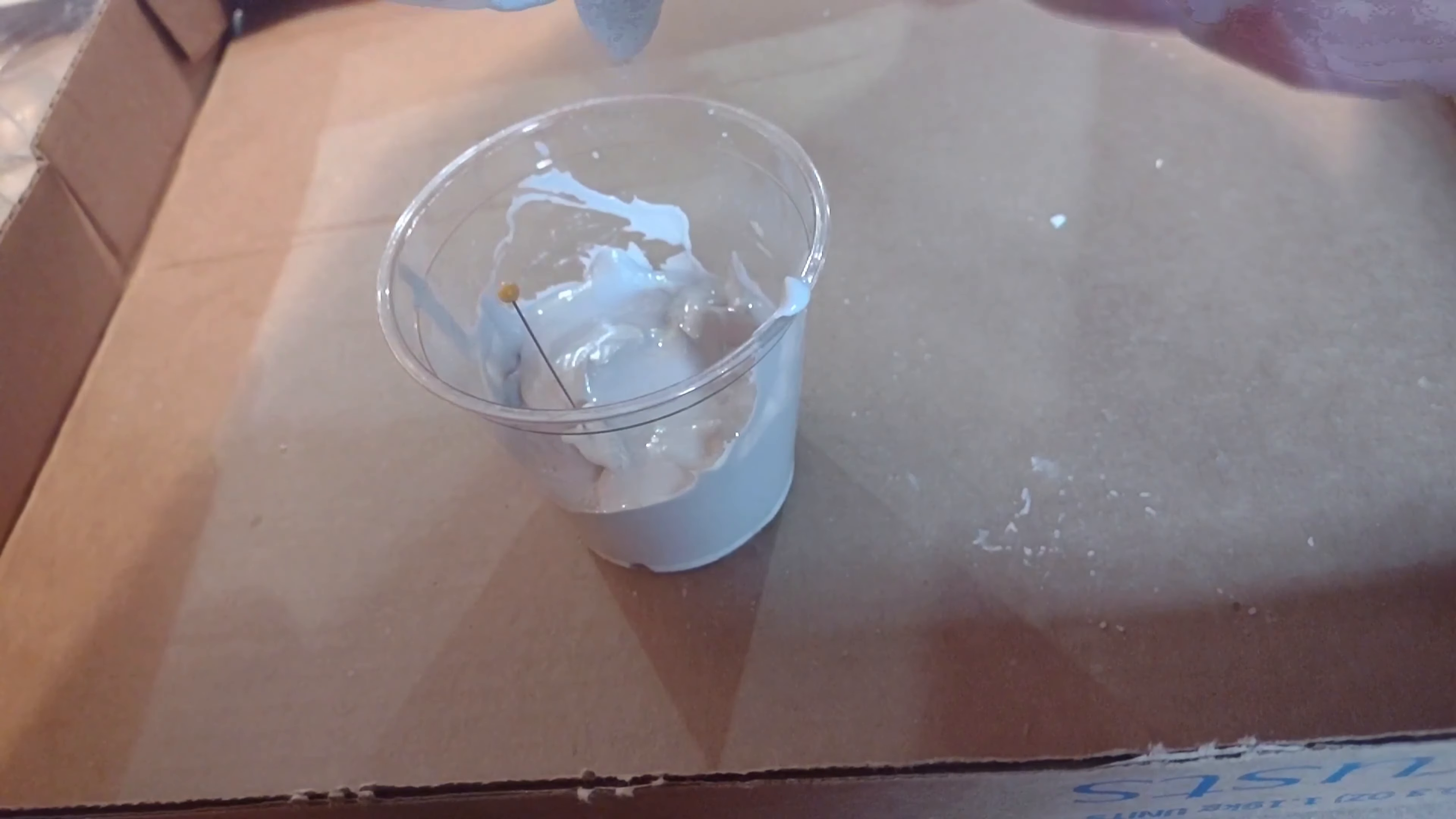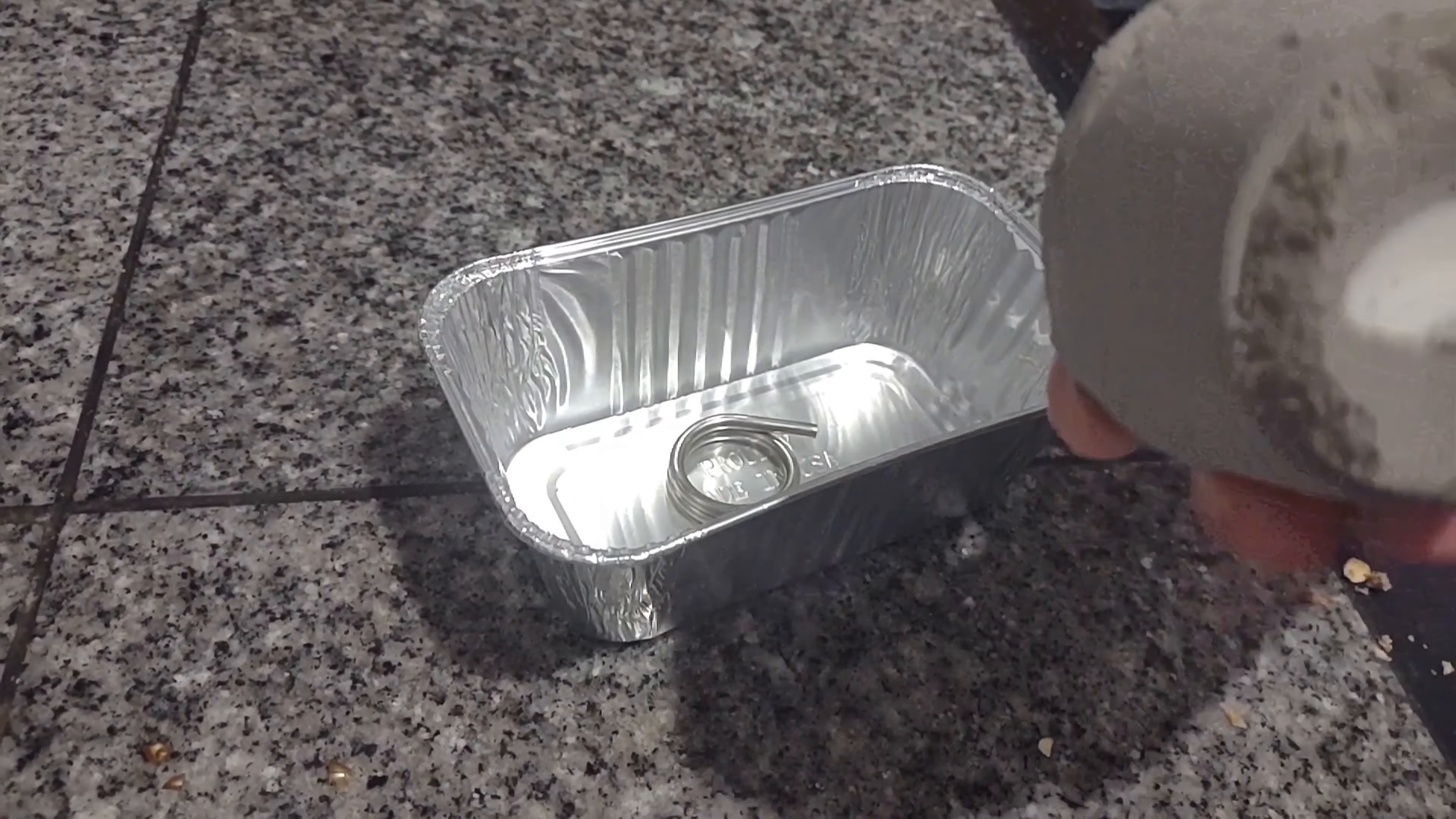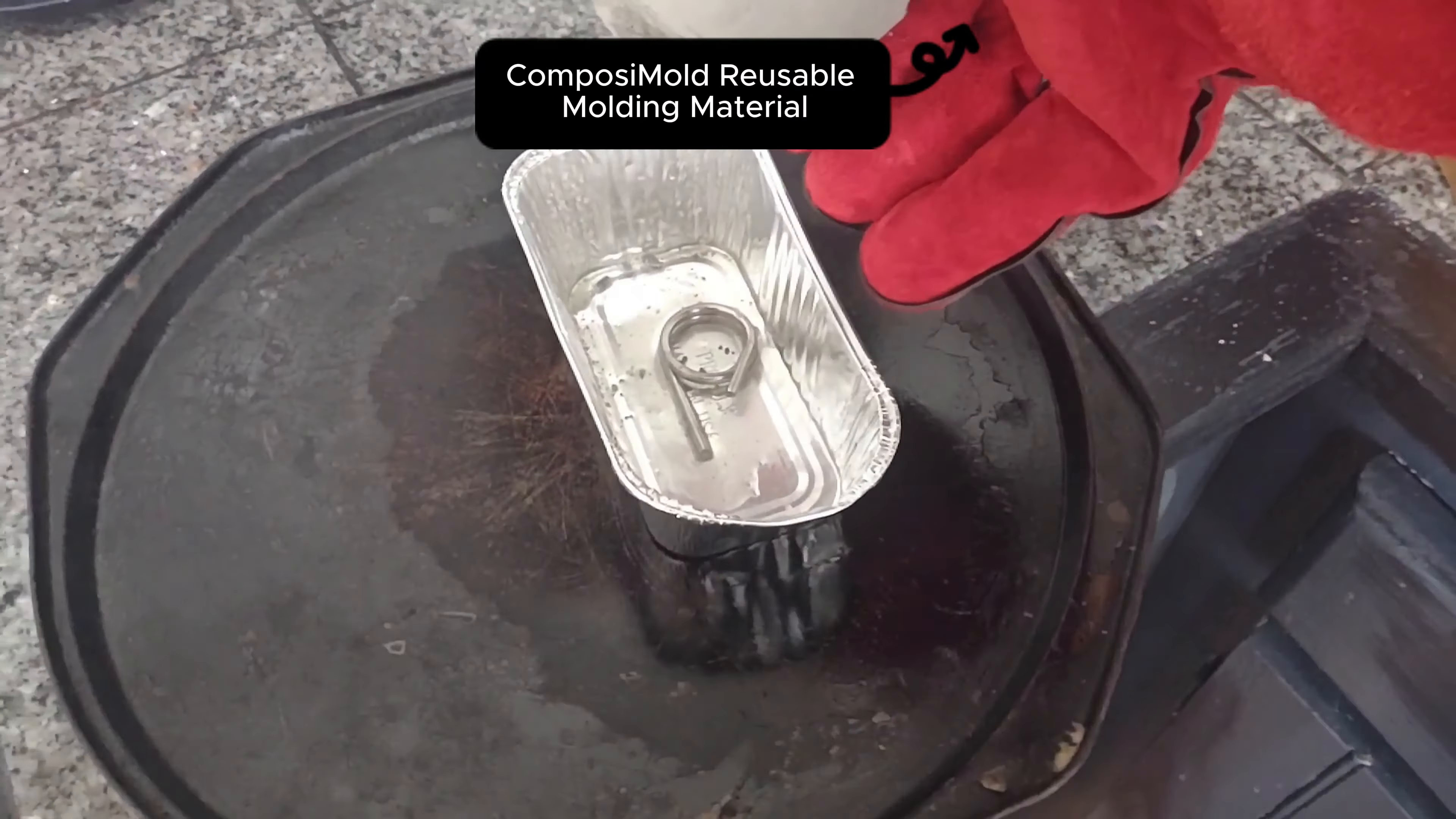Now we need to melt out the wax from the plaster or ComposiStone casting so that it's ready to put in the hot metal into it. I put it into the oven first I put it in about 350 degrees Fahrenheit let that melt out most of the wax and then I put it up as high as I could get in the oven which is about 550 degrees Fahrenheit and that was to get out the rest of the wax if there was anything left.